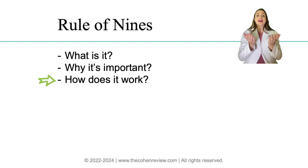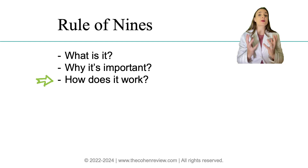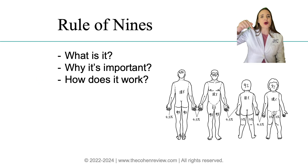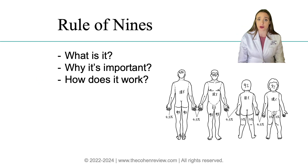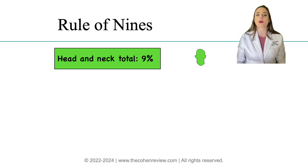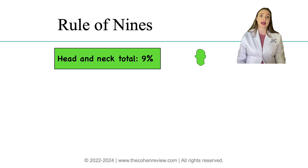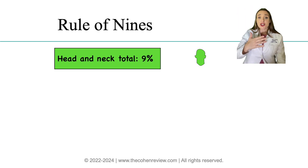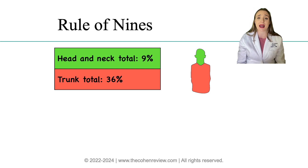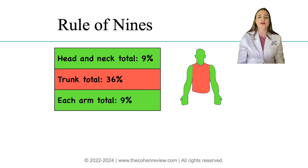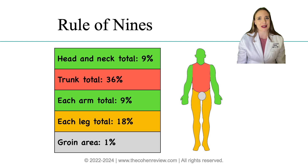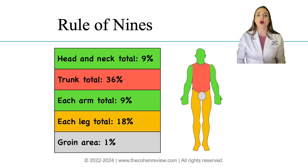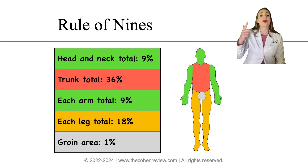So how do we use the rule of nines? It works by assigning an approximate percentage to each body part, as shown in this image. These are the values for adults. The front of the head and neck is 4.5%; the back of the head and neck is also 4.5%, for a total of 9%. The trunk is 18% for the front and 18% for the back, a total of 36%. For each arm, 4.5% front and 4.5% back. For each leg, 9% front and 9% back. The groin area applies to both genders as 1%.